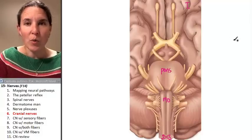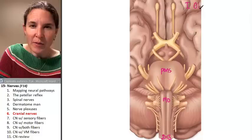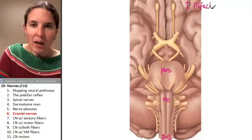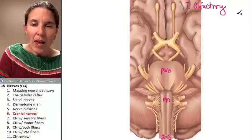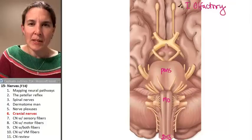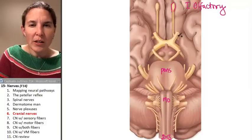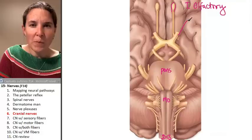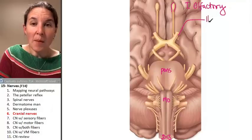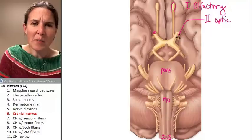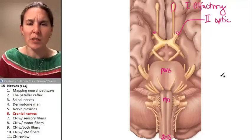Cranial nerve number one is the olfactory nerve, and this is it right here. Cranial nerve number two is the optic nerve, and again, these are all coming in pairs. So, here's the optic nerve.